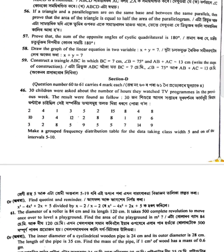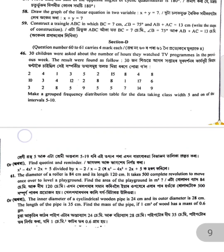30 children were asked about the number of hours they watched TV programs in one week. From the findings, construct a grouped frequency distribution table with class interval of 5, starting from the first class interval.